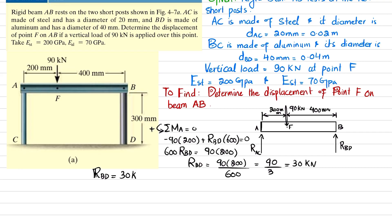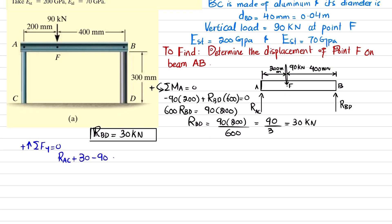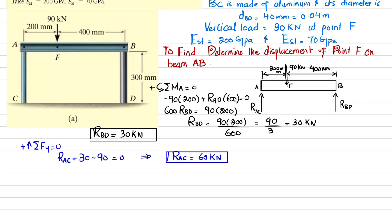R_BD is 30 kN. Using the sum of forces in the y-direction equal to zero: R_AC + R_BD − 90 = 0, so R_AC + 30 − 90 = 0, giving R_AC = 60 kN. These are the reaction forces offered by the short columns on the rigid beam. As a result, the beam applies equal and opposite forces on the columns, meaning both posts AC and BD are in compression.